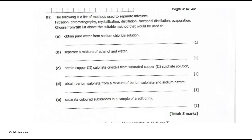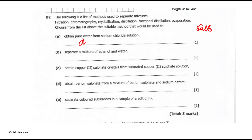Question B2: the following is a list of methods used to separate mixtures — filtration, chromatography, crystallization, distillation, fractional distillation, and evaporation. Choose the suitable method to obtain pure water from sodium chloride solution. Sodium chloride is common salt. The best method to obtain pure water from it is distillation.